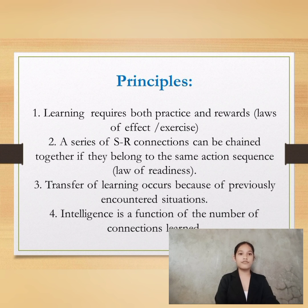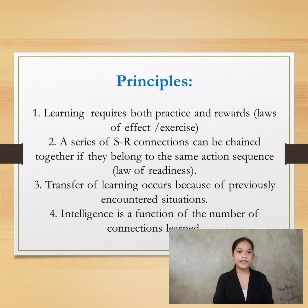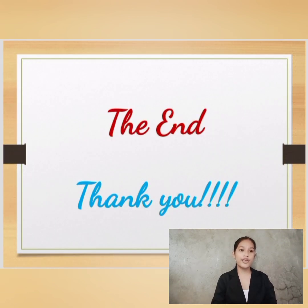The principles of connectionism theory: First, learning requires both practice and rewards. Second, a series of S-R connections can be chained together if they belong to the same action sequence. Third, transfer of learning occurs because of previously encountered situations. Fourth, intelligence is a function of the number of connections learned. That would be all. Thank you.